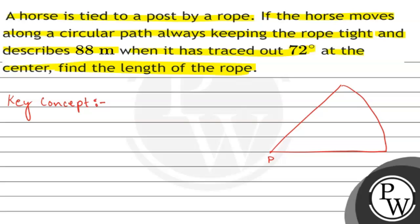So we have point P as the post. PA and PB are the length of the rope in the tight position, and suppose the horse moves along the arc AB.